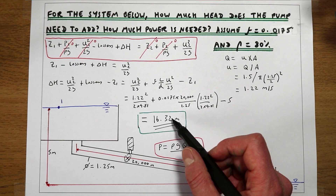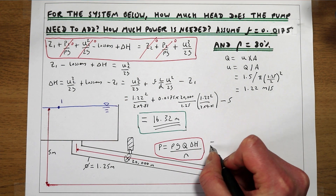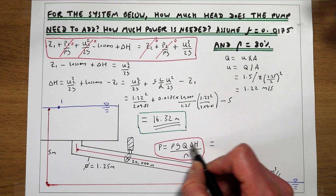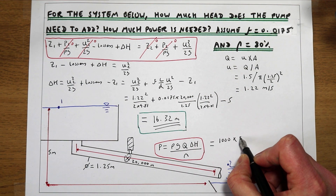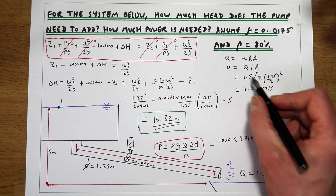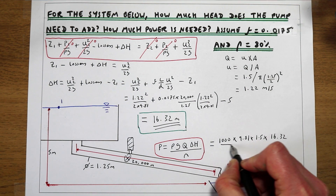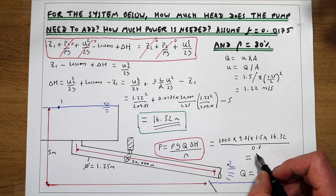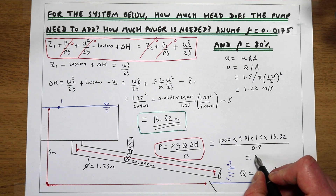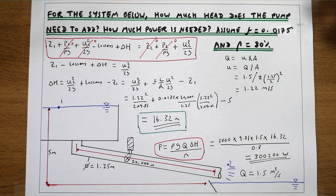Now we have that figure, we can work out how much power we need to provide to the pump. Power equals density of water times gravity times flow rate times pump head, divided by pump efficiency. With density of water, g, flow rate of 1.5 m³/s, head of 16.32 m, divided by efficiency of 0.8 (80%), this tells us that the power the pump needs to provide is approximately 300,200 watts — so about 300 kilowatts.